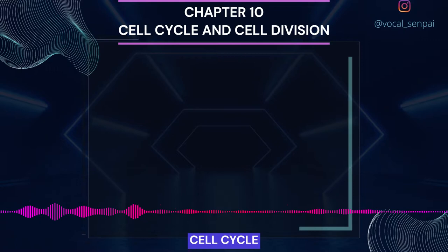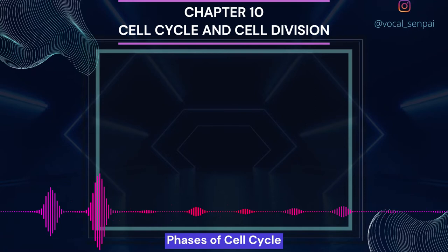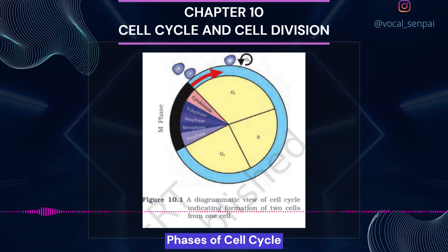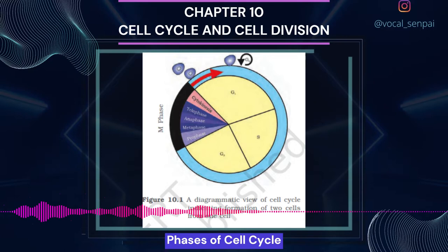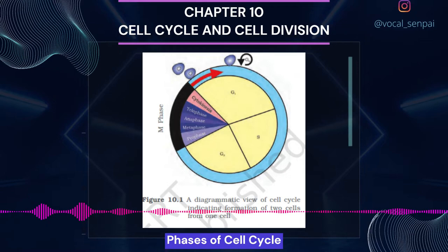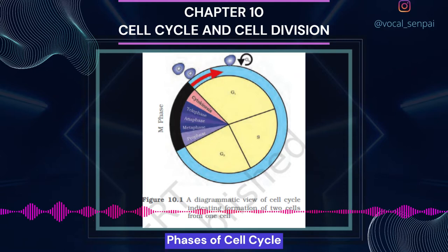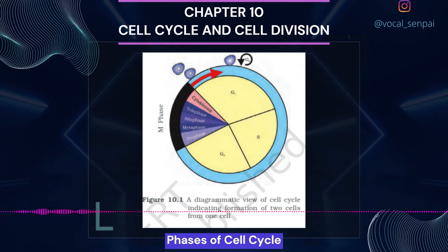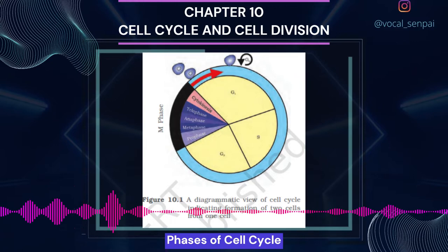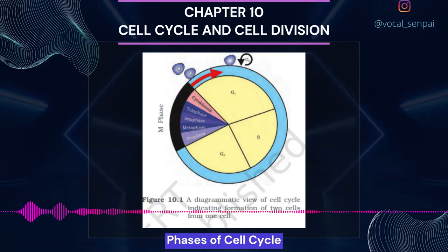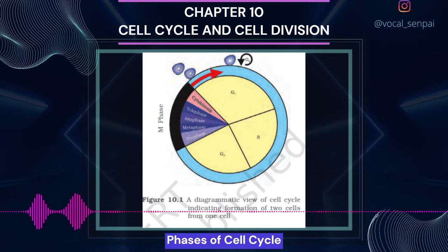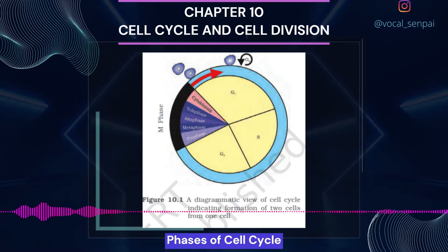A typical eukaryotic cell cycle is illustrated by human cells in culture. These cells divide once in approximately every 24 hours. However, this duration of cell cycle can vary from organism to organism and also from cell type to cell type. Yeast, for example, can progress through the cell cycle in only about 90 minutes. The cell cycle is divided into two basic phases: Interphase and M-Phase (Mitosis Phase). In the 24-hour average duration of cell cycle of a human cell, cell division proper lasts for only about an hour, while the interphase lasts more than 95% of the duration of cell cycle.